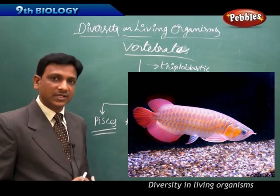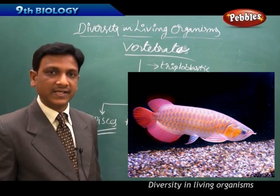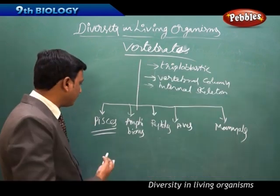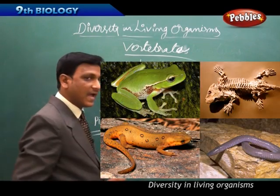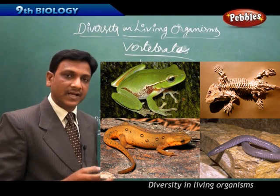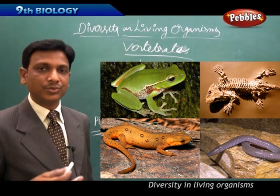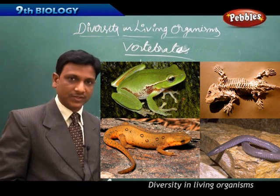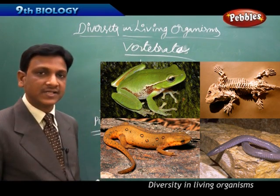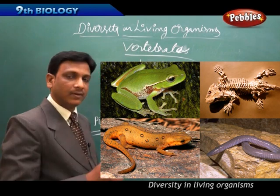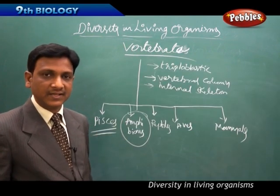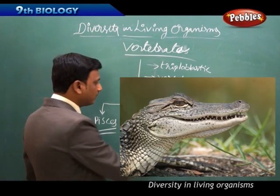Fishes have differentiated organ systems including digestive, excretory, and reproductive systems. Amphibians are able to live both in water and on land. Examples include frogs and salamanders. A special feature of amphibians is breathing through their moist skin. They also have lungs and breathe through gills during the larval stage.